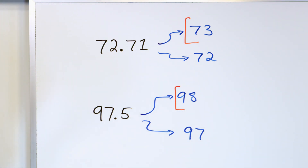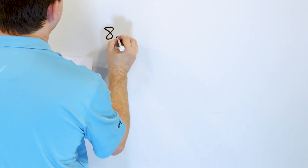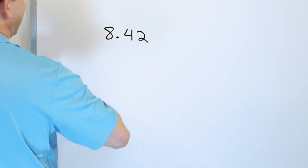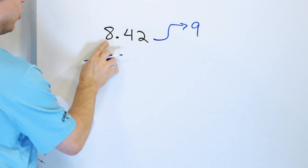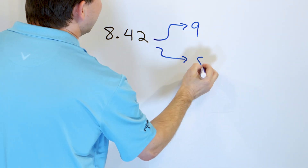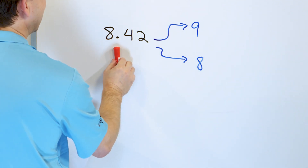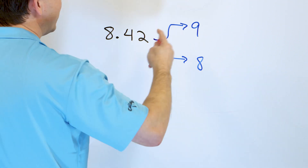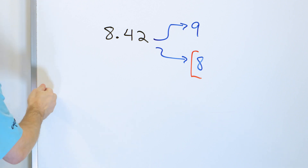Let's take a look at 8.42. The whole number is 8, and we're rounding to the nearest whole number, which means we either go up to 9 or round down and stay at 8. We look next door to the tenths place — we have a 4. That's less than 5, which means we round down to 8.